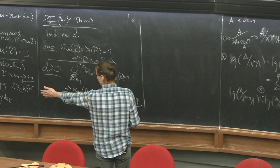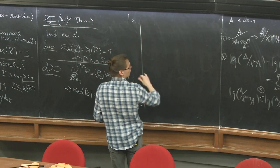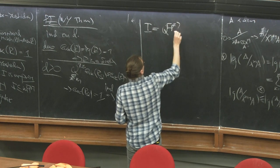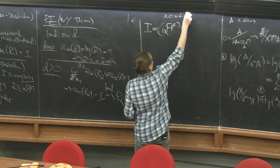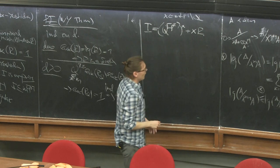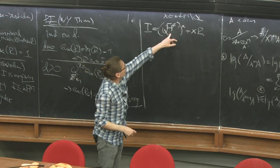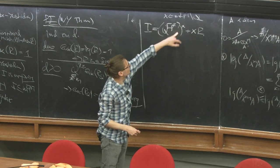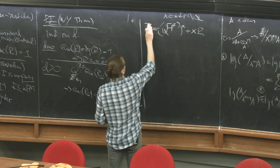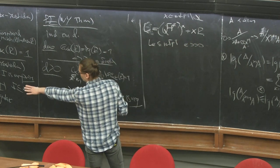We need to construct the sequence satisfying the Watanabe-Yoshida conditions. Take L_e = q^[p^e]^* + x·r where x ∈ m^[p] \ q. For e large enough, this is contained in the bracket power of m^p, so the condition L_e ⊆ m^[p] is satisfied.